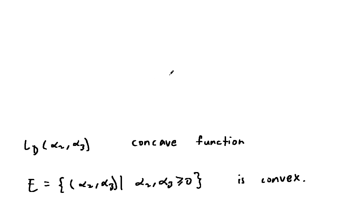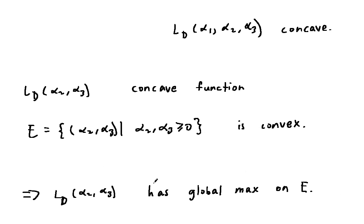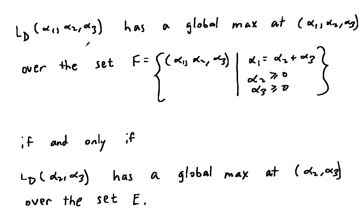Note also that L sub d of (alpha1, alpha2, alpha3) is also concave. What we have here is that L sub d of (alpha2, alpha3) is a concave function and E is convex. So L sub d of (alpha2, alpha3) has a global max on E. L sub d of (alpha1, alpha2, alpha3) has a global max at (alpha1, alpha2, alpha3) over the set F, given by this, if and only if L sub d of (alpha2, alpha3) has a global max at (alpha2, alpha3) over the set E.